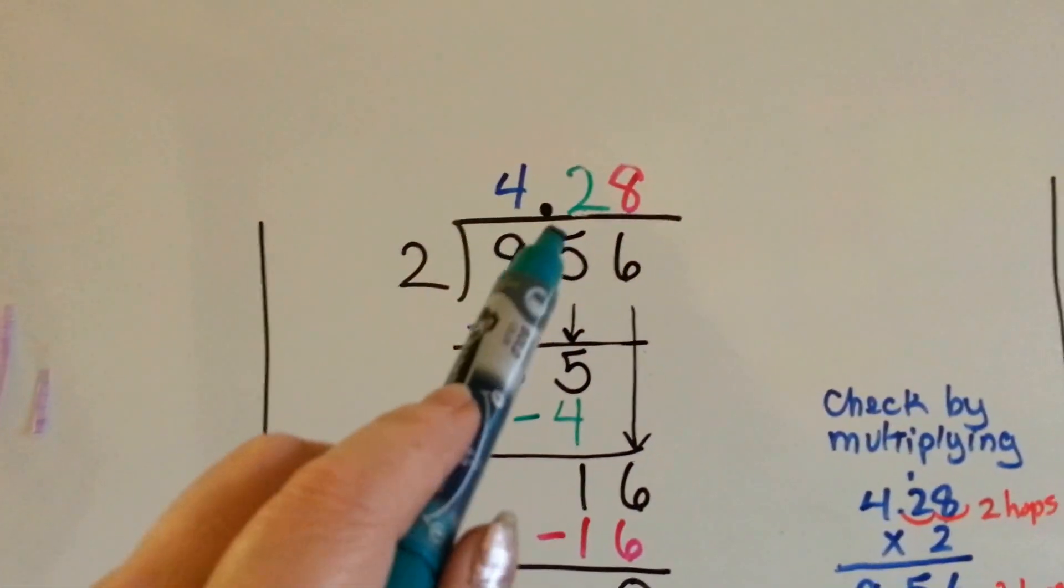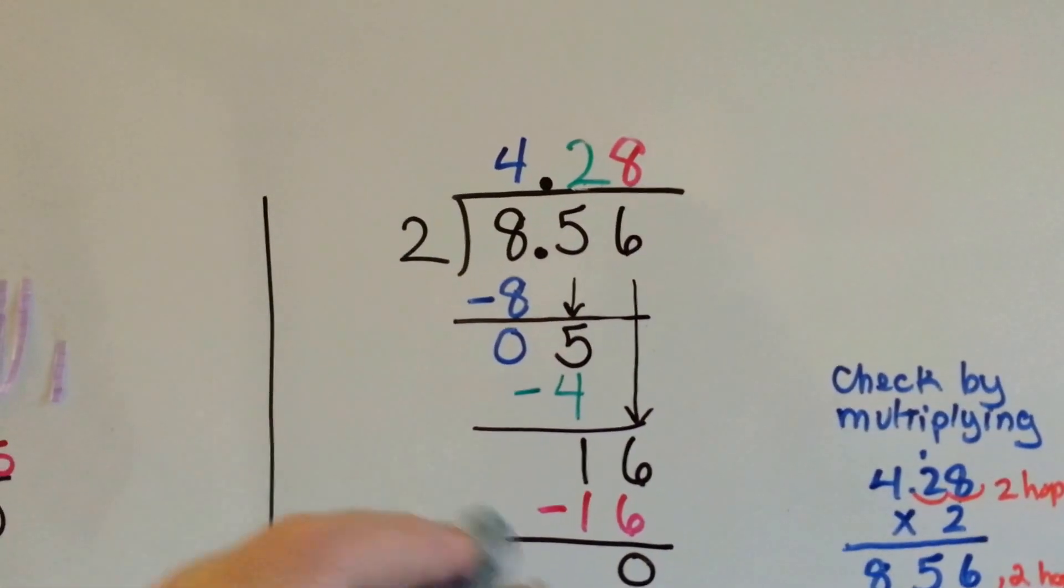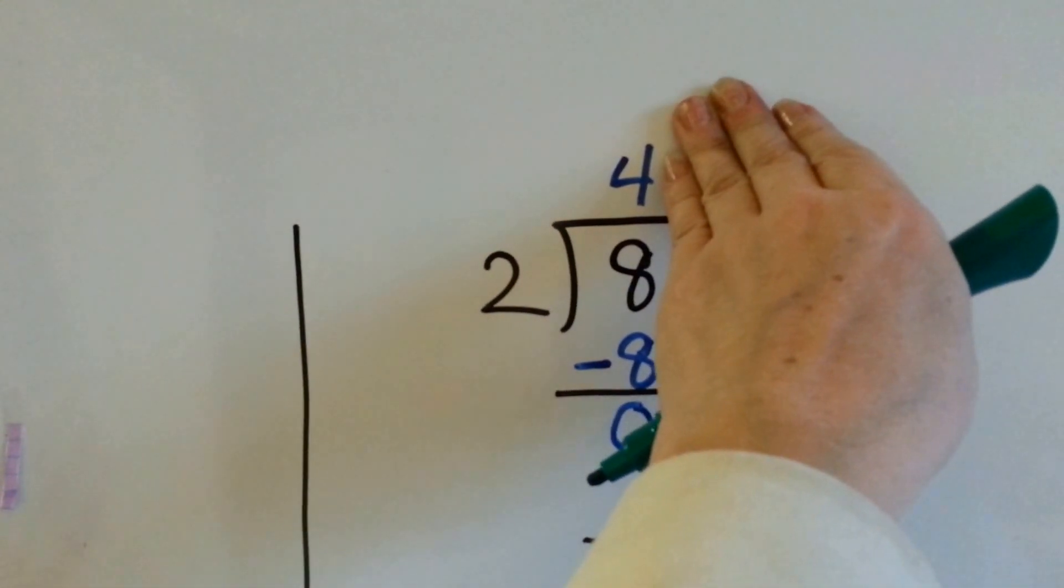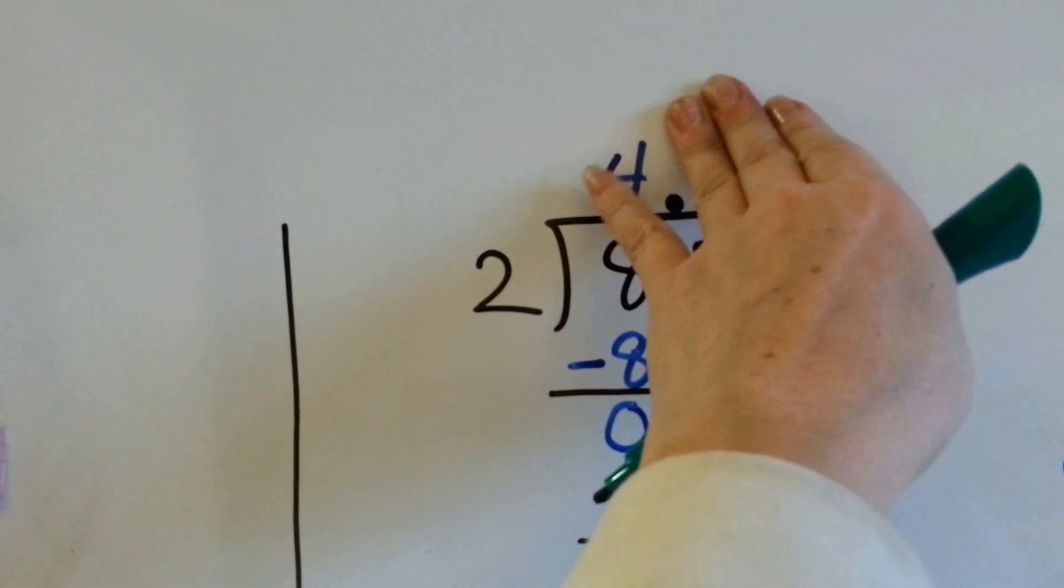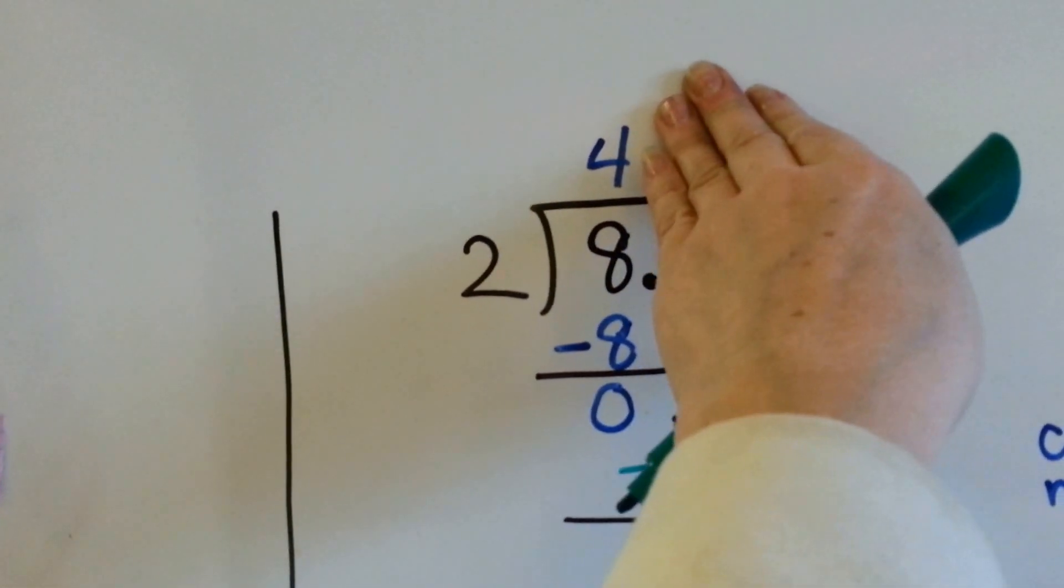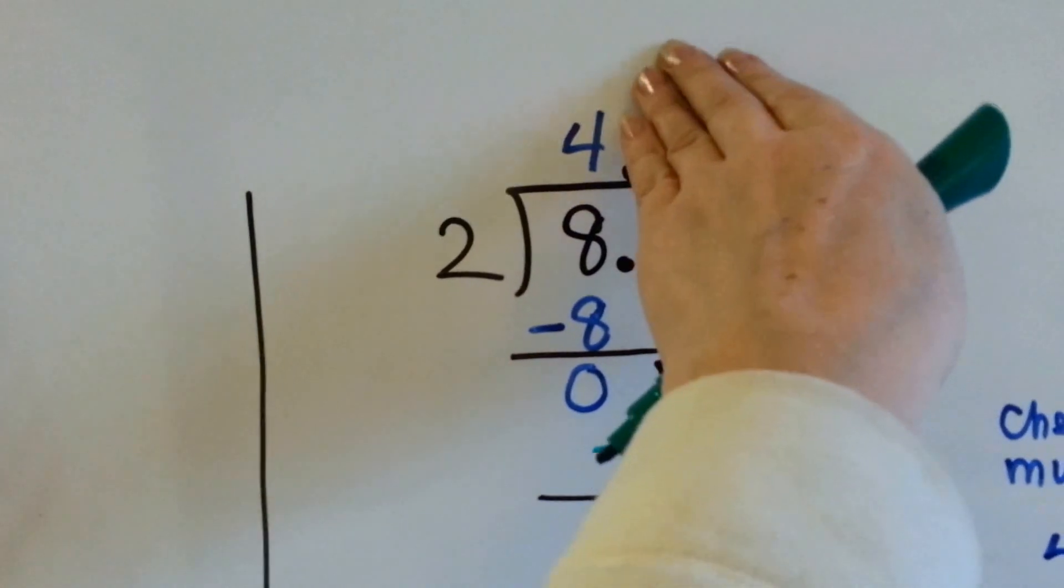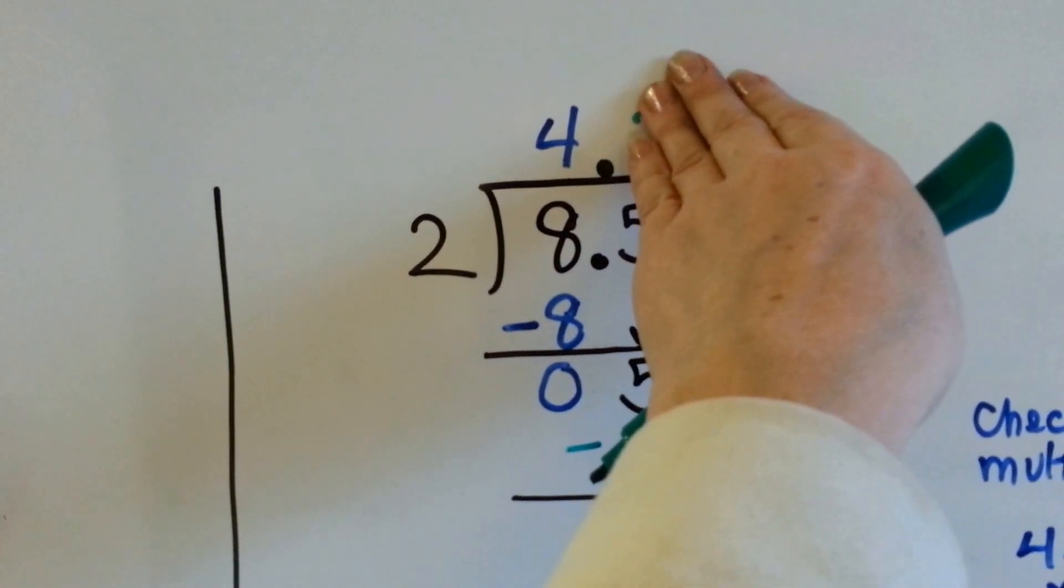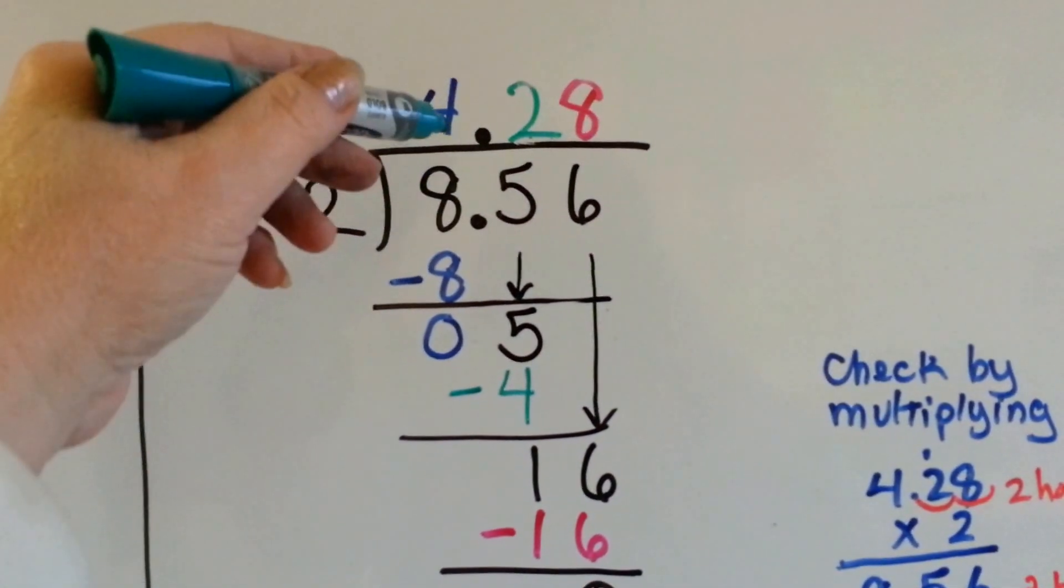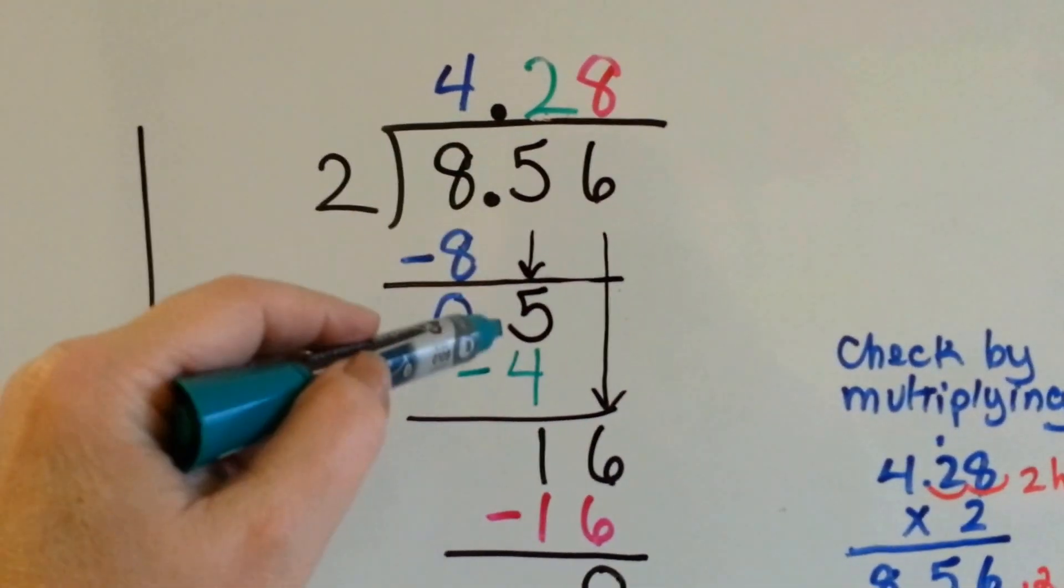If we have 8 and 56 hundredths, and we want to divide it by 2, we ask ourselves how many times can 2 fit into 8, and the answer is 4. So we put our 4 up here above the 8, because that's what we were dividing into, and we do our multiplication, we get 0, and we put our decimal point up there, which we can actually put before we even start doing the math problem, because we know it's going to go straight up.